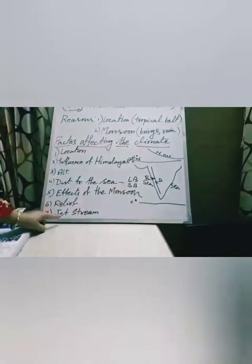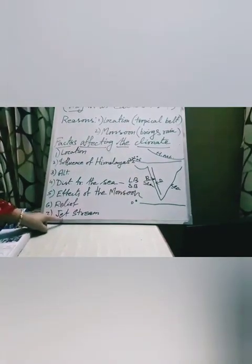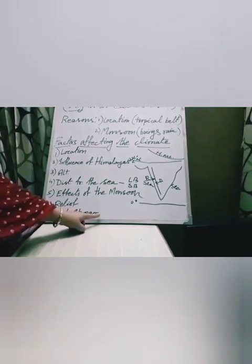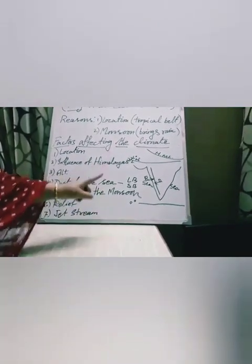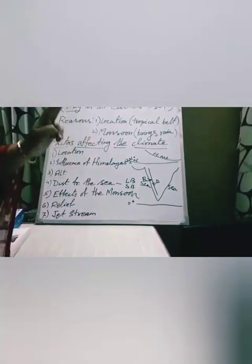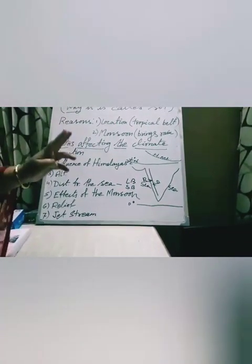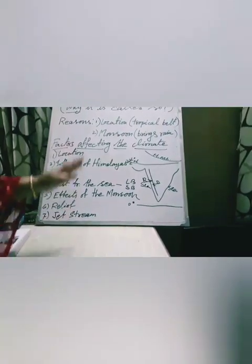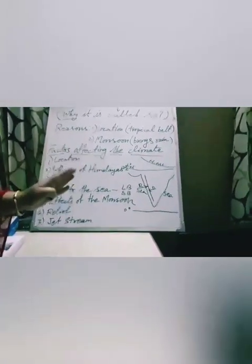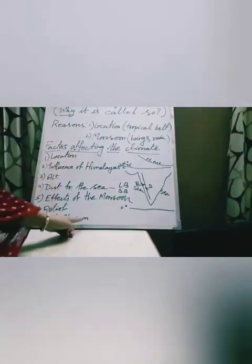The last factor is the jet stream. The jet stream is a strong wind that blows in a particular direction. In brief, this wind helps to bring the northeast monsoon. Monsoon has two branches — one is southwest, another is northeast — and the northeast monsoon blows due to the jet stream.